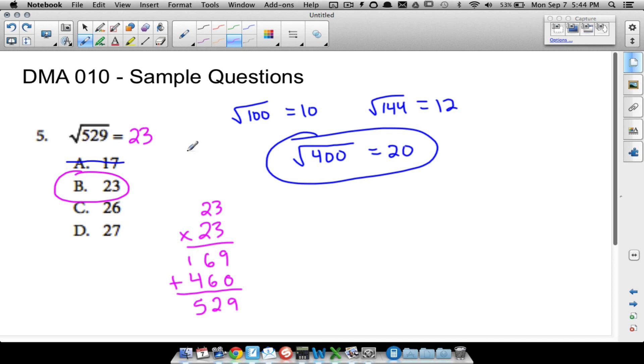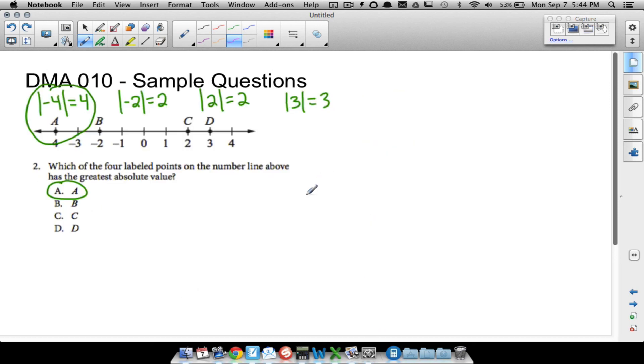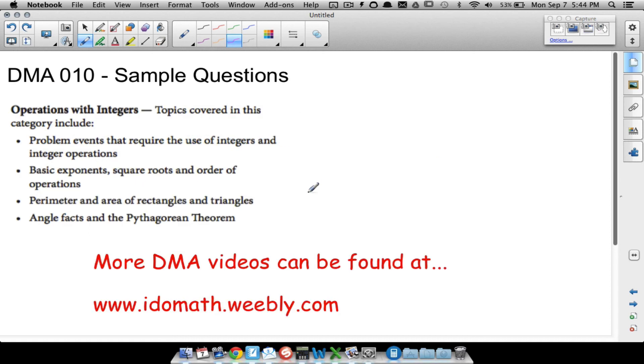Here are five sample questions that you may see on the DMA 10 placement test. I didn't cover Pythagorean theorem here, and we didn't look at any perimeter problems, so please visit this website. It's organized, it's got a DMA section, it's got a DMA 10 section, and I promise you can find videos related to perimeter and area as well as angles and the Pythagorean theorem. That's it for this video, hope it helped.